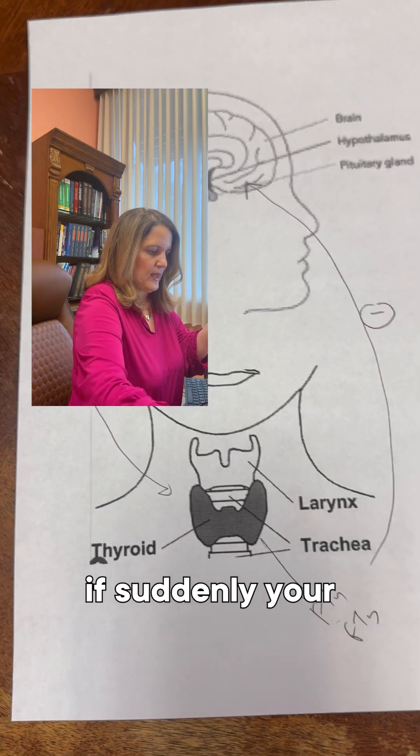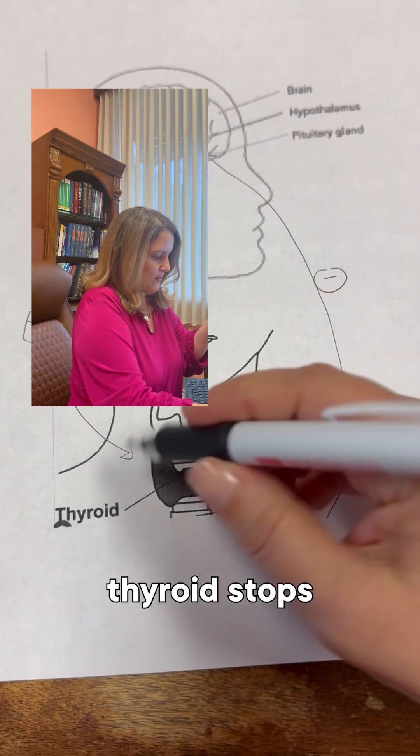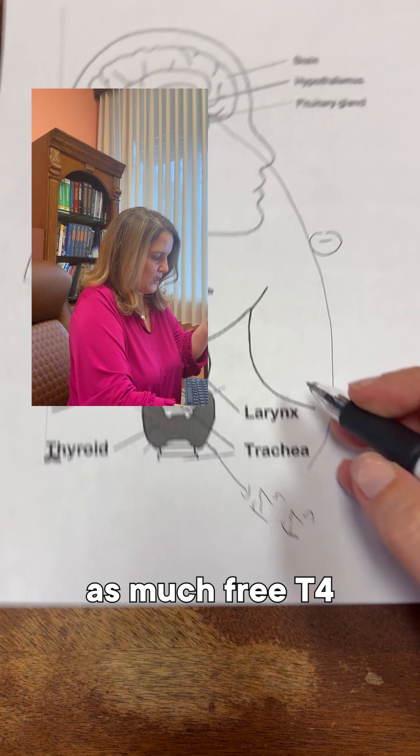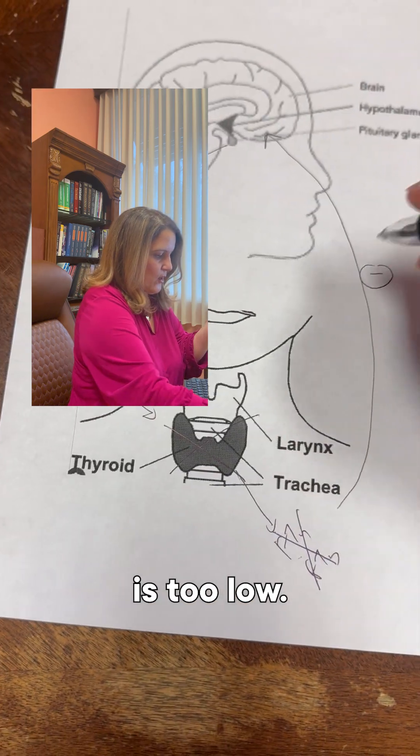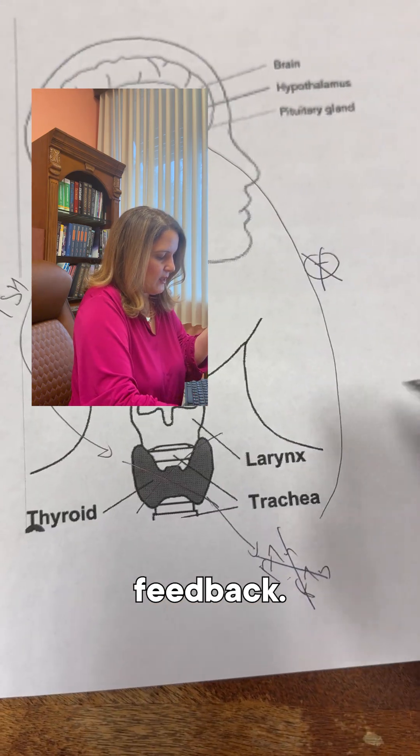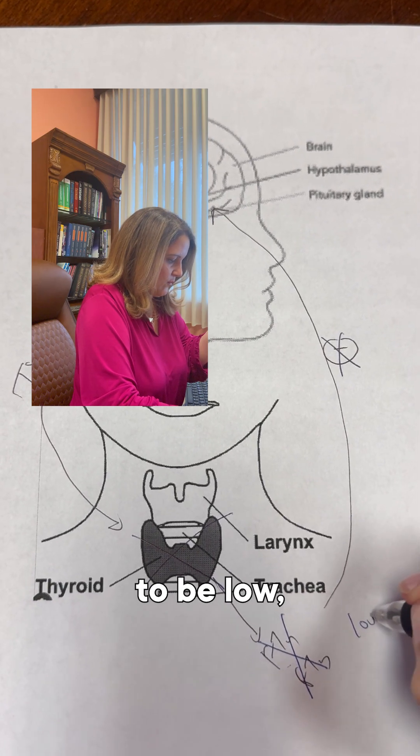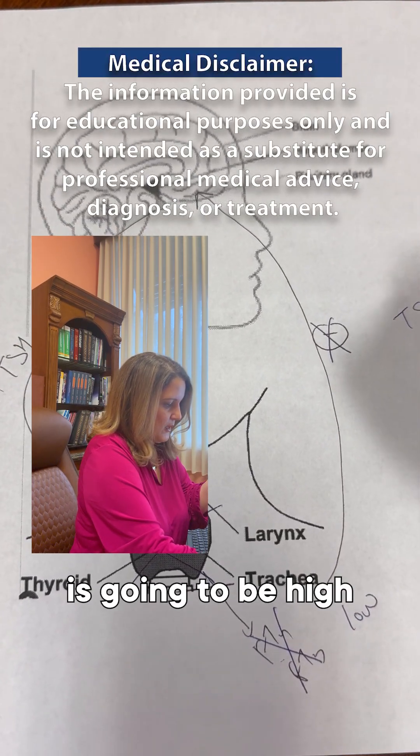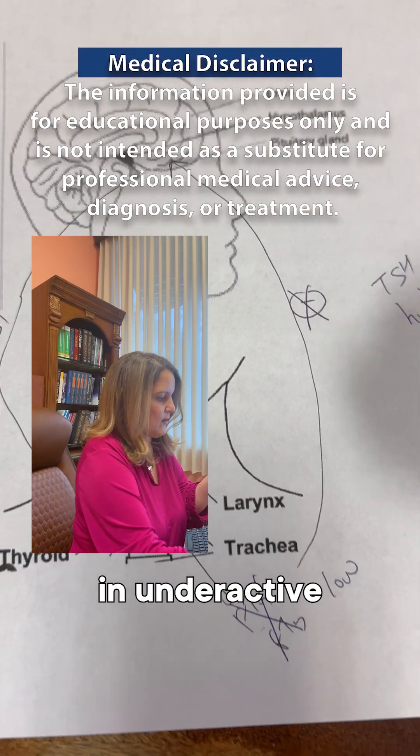So what happens if your thyroid stops working well? You don't make as much free T4. The level is too low, and you lose the negative feedback. So the free T4 and free T3 are going to be low, and the TSH is going to be high in underactive thyroid.